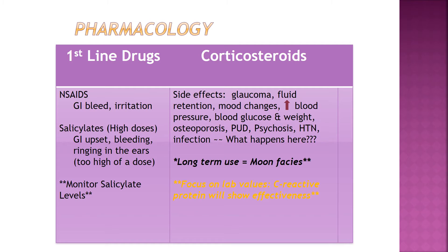Regarding pharmacology, we want to help manage the inflammatory process and the pain these patients suffer with, particularly the arthritic pain. We need to be careful because some medications are contraindicated in patients with renal insufficiency, so we want to get a baseline for that. NSAIDs are used, but watch for GI bleeding and GI irritation. Salicylates may be given in high doses — 325 milligrams four to six times daily — and you want to monitor levels and watch for bleeding.